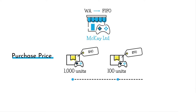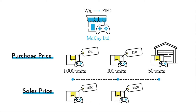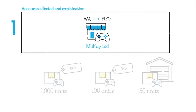Ending inventory for the period contained 50 units. The sales price per unit was $200 and remained constant throughout the period. We're asked: which accounts will be affected by a change in the accounting from weighted average to FIFO? And provide an explanation of how these accounts will be affected.